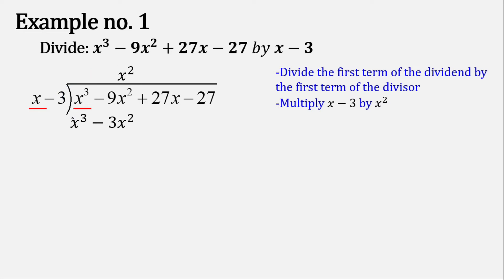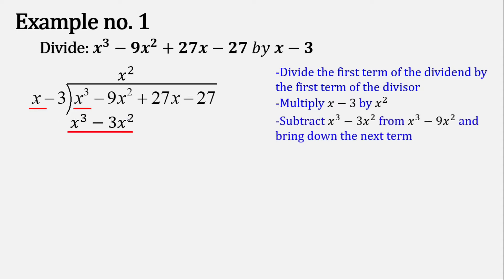Now let's subtract. When subtracting polynomials, we just change the sign and then proceed to addition. In this case, this is positive and this is negative — all we have to do is change the sign. This will cancel out. Negative 9x squared plus 3x squared is negative 6x squared. Then let's bring down 27.